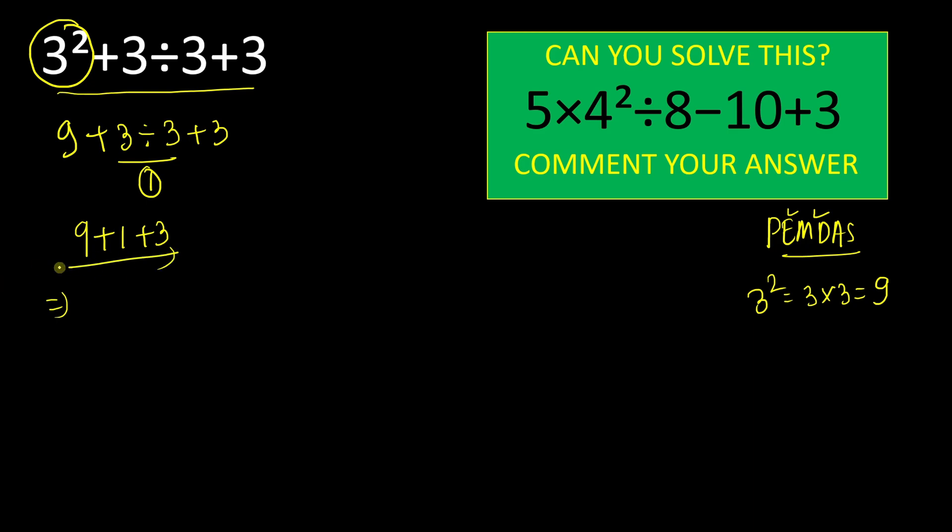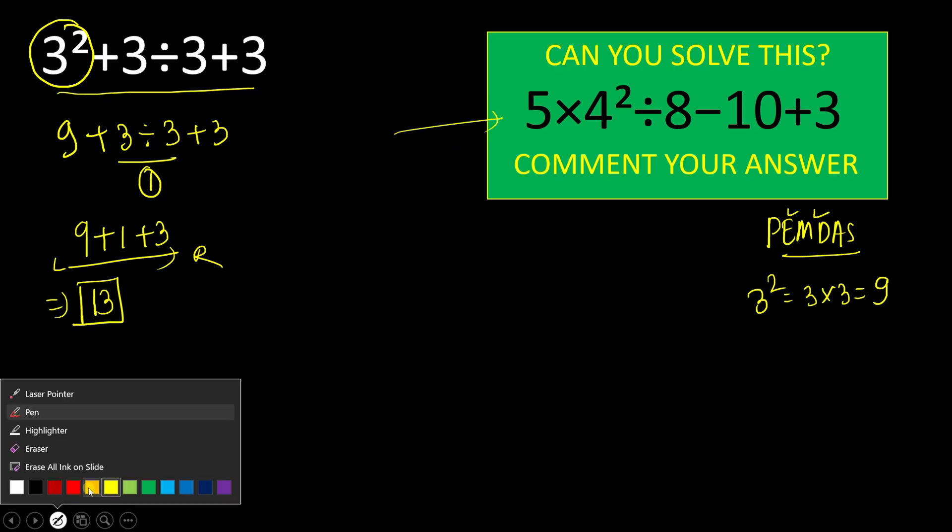9 + 1, that is 10. 10 + 3, that is 13. So the right answer is 13. And moving to this next question, we have 5 × 4² ÷ 8 - 10 + 3.